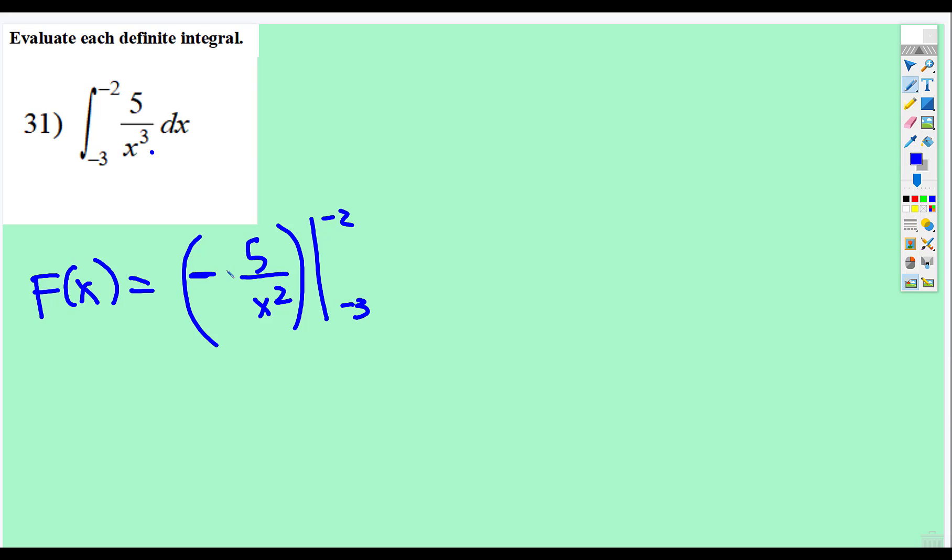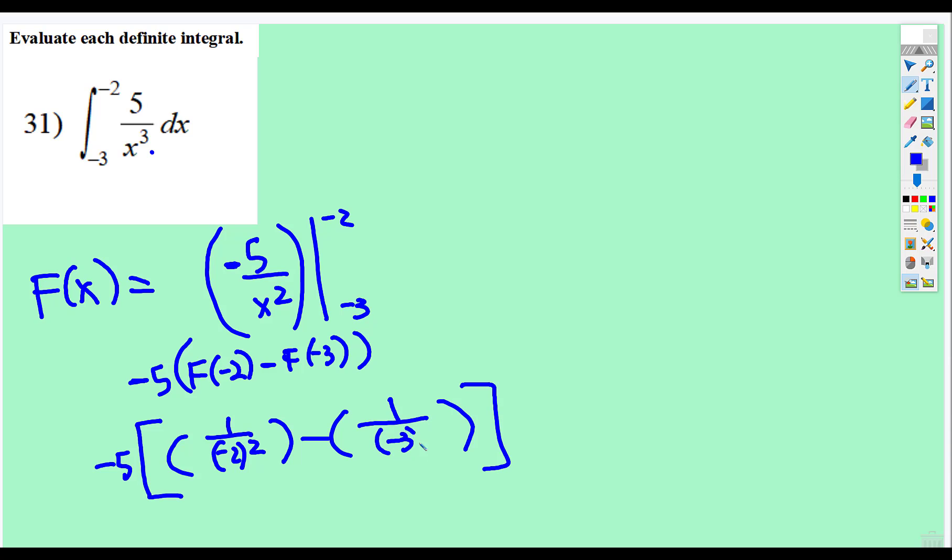And that is from negative 2 to negative 3. And this negative sign we can actually bring out in front. So we can bring out negative 5, we'll just do it that way. So when we do the f of negative 2 subtract f of negative 3, we're going to bring the negative 5 out in front. And then all we're integrating is one, all we're working with is the 1 over x squared.